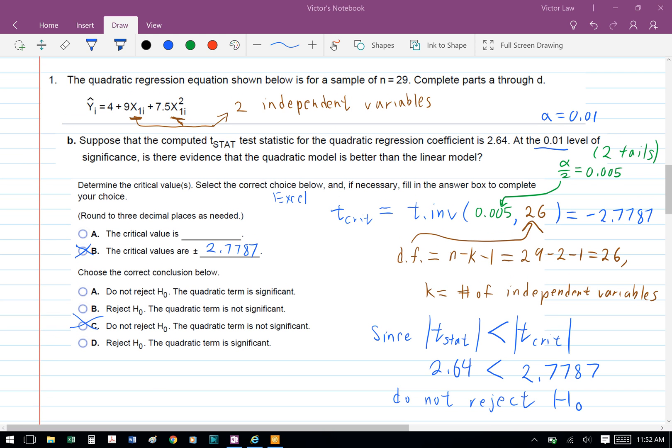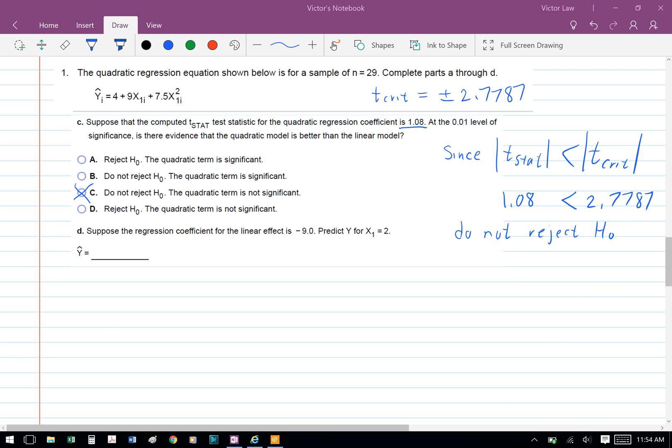Finally, since the absolute value of the t statistic is less than the absolute value of the t critical, we do not reject H₀. As a result, Part c: If the t statistic is now 1.08, how would that change the result?